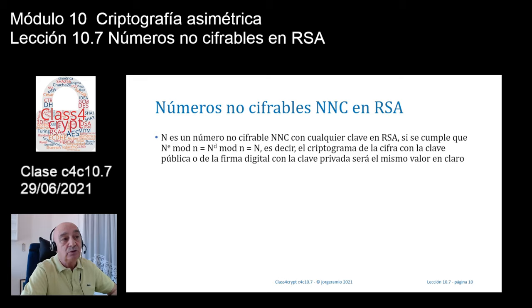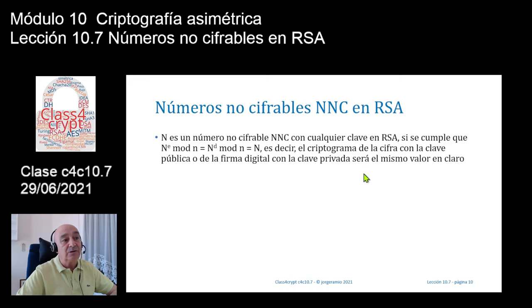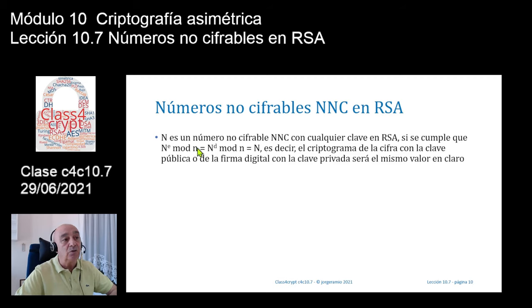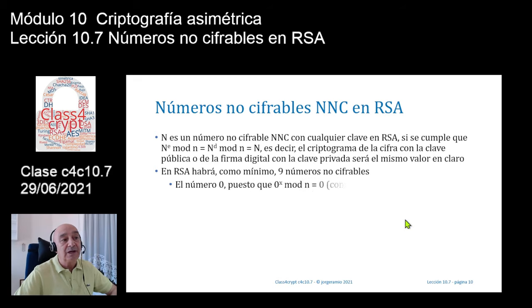Diremos que N será un número no cifrable (NNC) con cualquier clave, ya sea la clave pública o la clave privada en RSA, si se cumple la siguiente condición: N elevado a la clave pública módulo N da como resultado N, o bien N elevado a la clave privada módulo N da como resultado N. Es decir, el mismo número va en claro y no se cifra. Vamos a ver que en RSA existirán como mínimo un total de nueve números no cifrables.